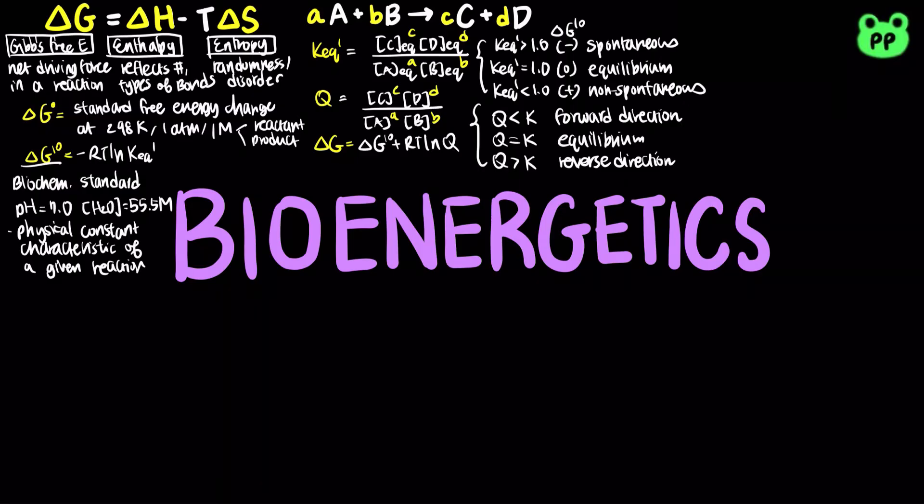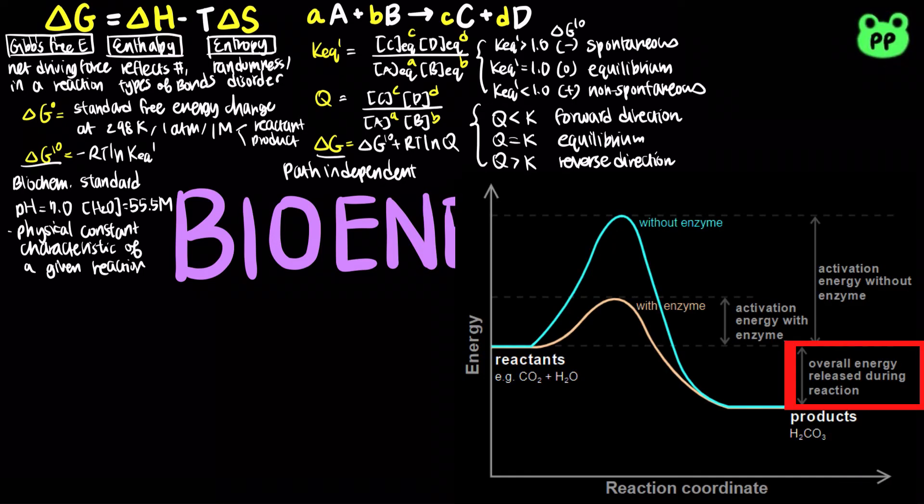The free energy change for a reaction is independent of the pathway by which the reaction occurs. It depends only on the nature and concentration of the initial reactants and the final products. For instance, enzymes cannot change equilibrium constants. They can only increase the rate.